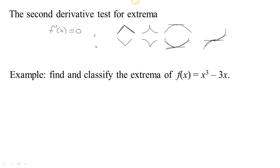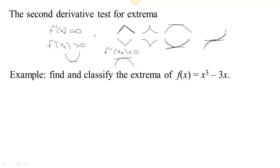We also had the second derivative test. If the first derivative existed and we could find a second derivative as well, then we could examine the second derivative. Once we had a critical spot where the first derivative was 0, if we looked at the second derivative at that same place and it was positive, we knew the first derivative was increasing, so we were at the bottom of a bowl. But if the second derivative was negative, the first derivative would be decreasing, so we must be at the top of a bowl. This let us find critical points and classify them using either the first or second derivative test.